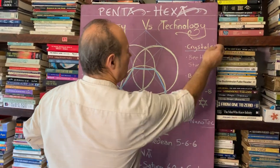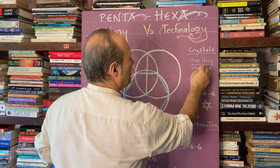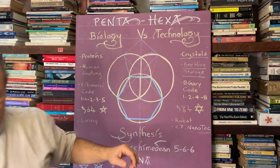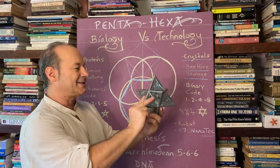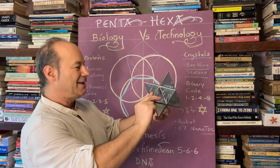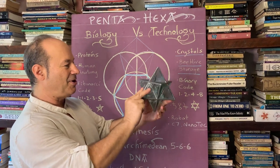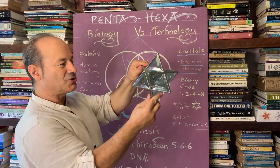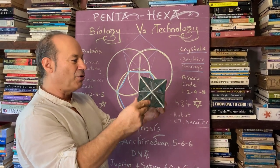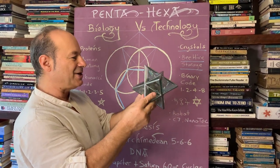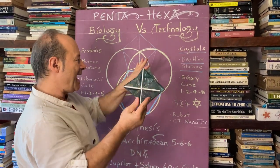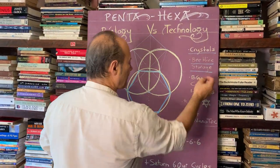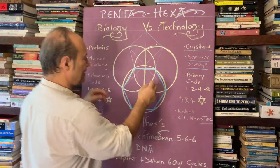Six is favorable for all things to do with crystals — the beehive, the quartz crystal. The star tetrahedron is based on six faces of the cube — two interpenetrating tetrahedra. This stores all the knowledge of your computer: billions of bits of information. So the six stores all this knowledge.